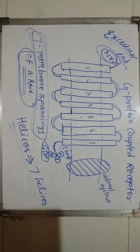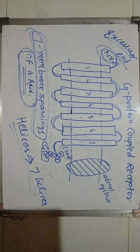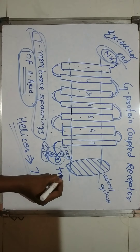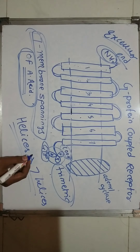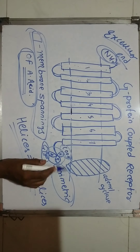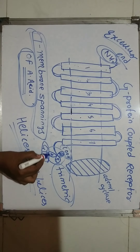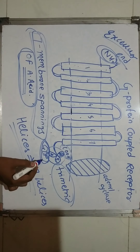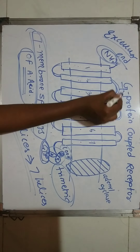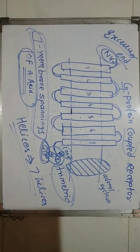Now we will discuss its functioning. But before that, we will talk about why it is called a G-protein coupled receptor. G-protein is a protein — it is a trimeric protein because it is composed of three units: the alpha unit, beta unit, and gamma unit. These are attached to a GDP unit. Because it is attached to a GDP unit, this whole assembly is known as the G-protein coupled receptor.